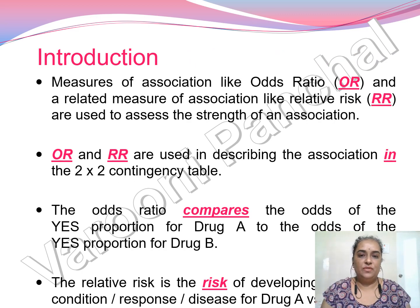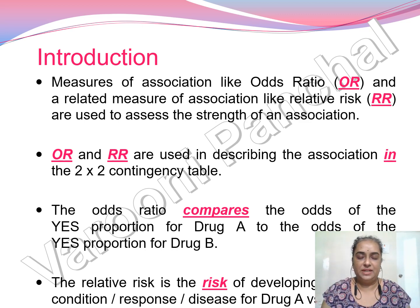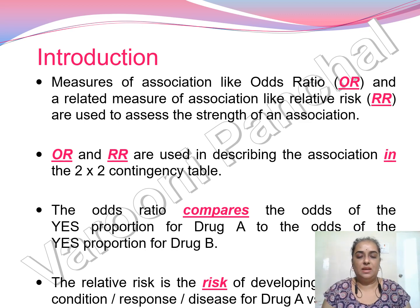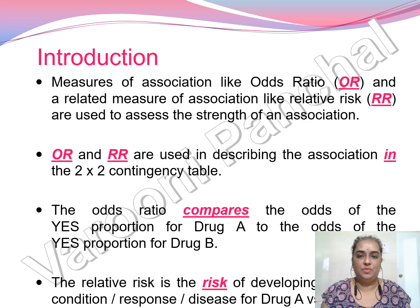Measures of association like odds ratio and relative risk are used to assess the strength of an association — meaning how two variables are associated and how strongly they are born with each other. OR and RR are used in describing the association in the two-by-two contingency table, the same concept explained in the difference in proportions in SAS software.